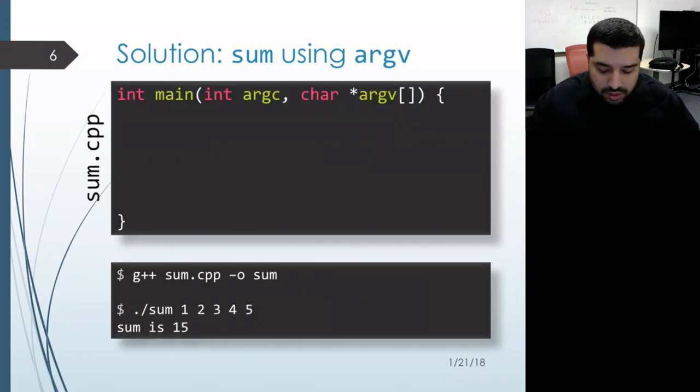When we actually invoke sum from the command line, we know that the program name is going to be our first command line argument, so we want to ignore that.